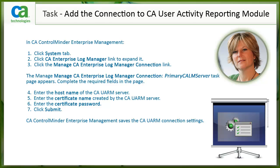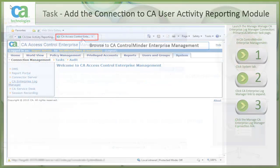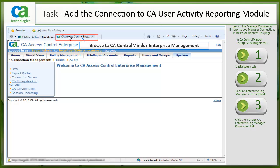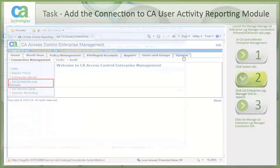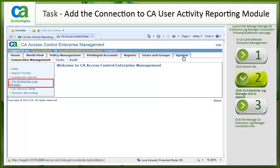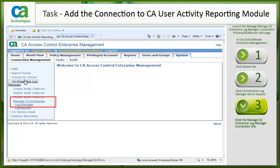To add the connection to CA UARM, you complete the following steps. I will demo these steps in the next few slides. You may choose to pause the slide by clicking the pause button below to read through the steps. Browse to the CA Control Minder Enterprise Management. Click the System tab. Expand the CA Enterprise Log Manager tree in the task menu to the left. Click to expand the CA Enterprise Log Manager link, then click the Manage CA Enterprise Log Manager connection link.